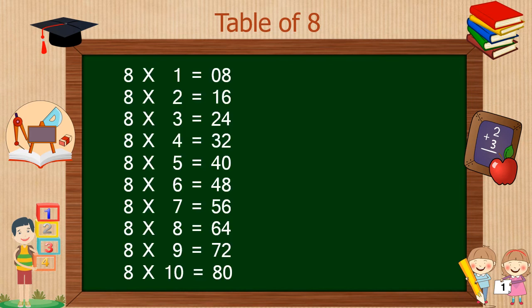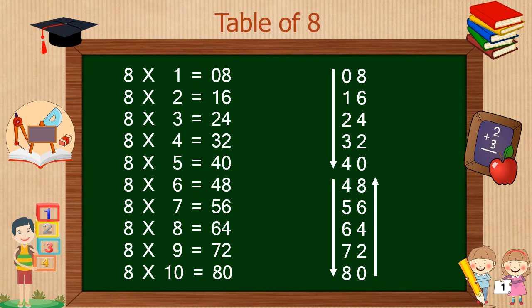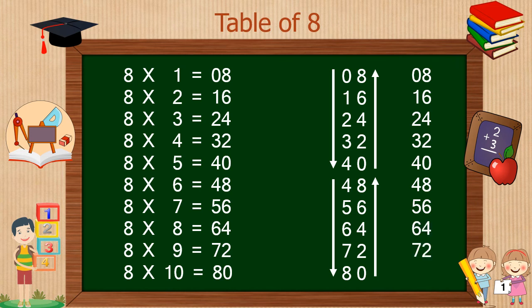Here is the first technique to write down the table of 8. We have to write all numbers from 0 to 8 from top to bottom, but when you reach 4, remember to include an extra 4 and continue up to 8. To the right side, we have to write down the table of 2 starting from 0, from bottom to top. When you reach 8, start again from 0 and write up to 8. So our table of 8 is ready.